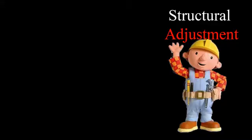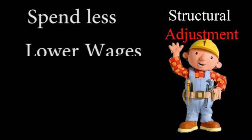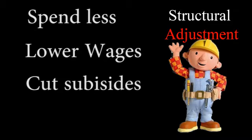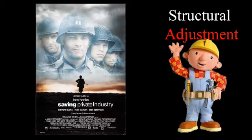Here are some ways that structural adjustment helps stabilize the economy. First, they try to get the government to rein in on deficit spending so they don't continue to devalue their currency and cause inflation. They also cut wages, eliminate subsidies and price controls, and promote a more liberal economy. They will try to privatize industries, improve governance, and fight corruption.